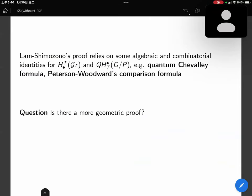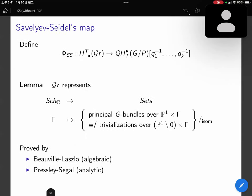The published proof by Lam-Shimozono relies on some algebraic and combinatorial identities, for example, the quantum Chevalley formula and Peterson-Woodward's comparison formula. These are formulas for the quantum cohomology. I am not knowledgeable enough to tell you more here. So the question is, can we prove the result more geometrically? Well, it is already geometric because their proof depends on these formulas, which are geometric.